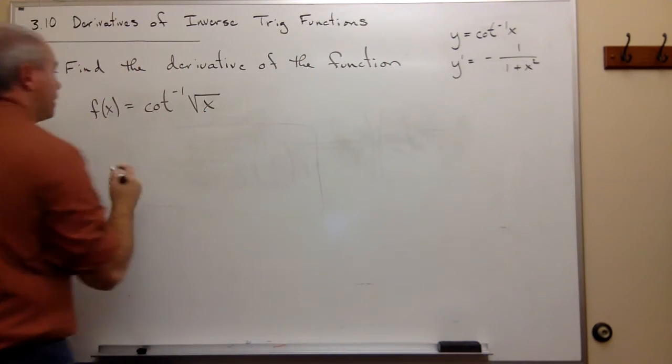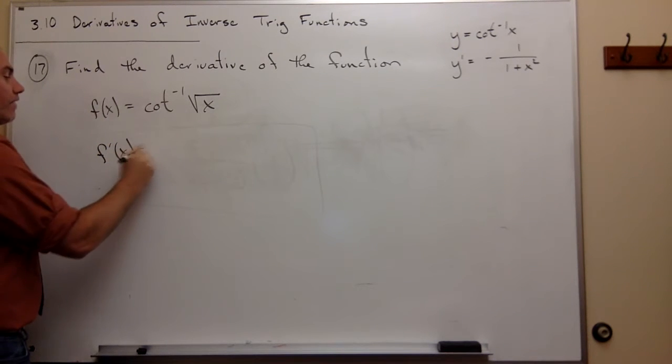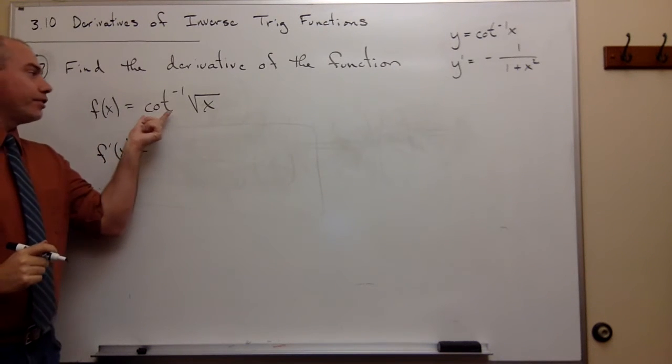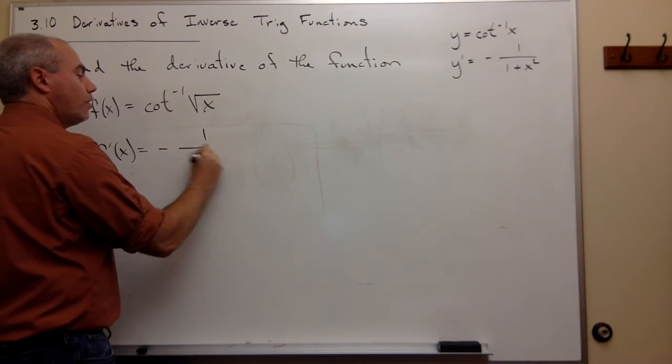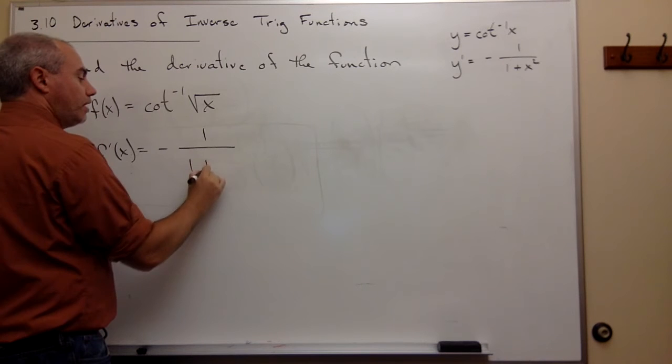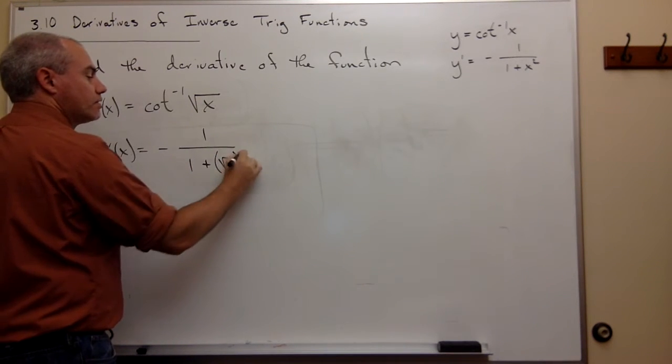Now let's come back over here and I have f prime of x. If I take the derivative of cotangent inverse of something, I get negative 1 over 1 plus that something squared, where that something is square root of x.